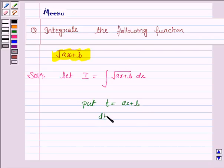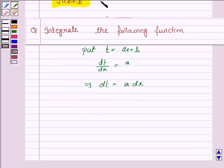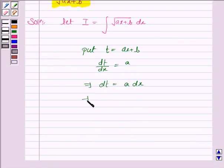So dt by dx is equal to a, and this implies dt is equal to a dx. And this again implies dx is equal to dt by a.